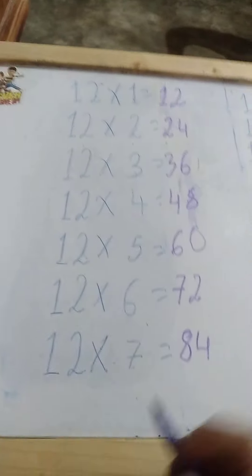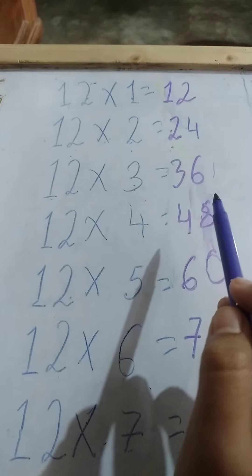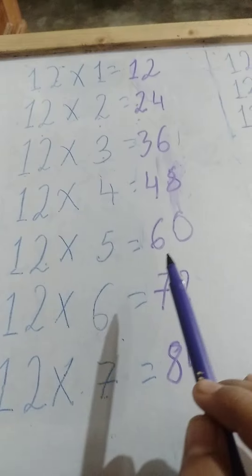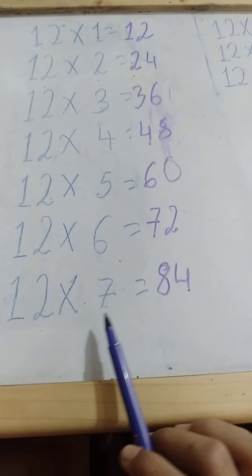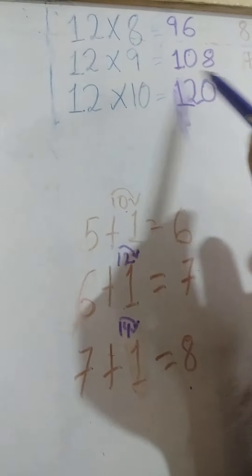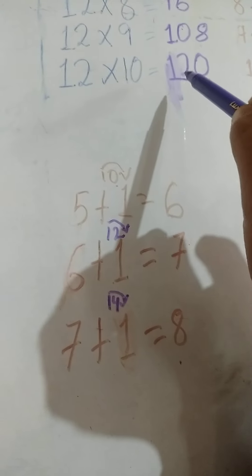I will read it and you listen: 12 ones are 12, 12 twos are 24, 12 threes are 36, 12 fours are 48, 12 fives are 60, 12 sixes are 72, 12 sevens are 84, 12 eights are 96, 12 nines are 108, 12 tens are 120.